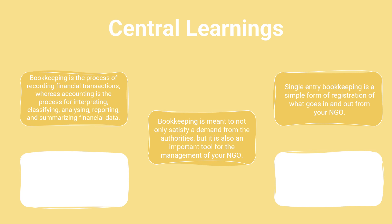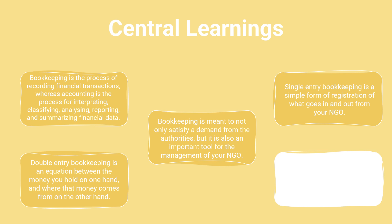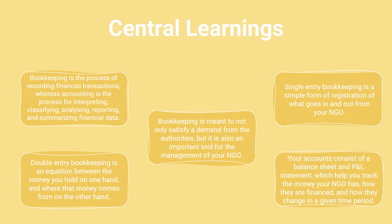Single-entry bookkeeping is a simple form of registration of what goes in and out of your NGO. Double-entry bookkeeping is an equation between the money you hold on one hand and where that money comes from on the other hand. Your accounts consist of a balance sheet and a P&L statement, which help you track the money your NGO has, how they're financed and how they change in a given time period.